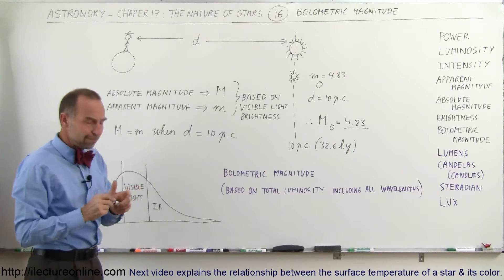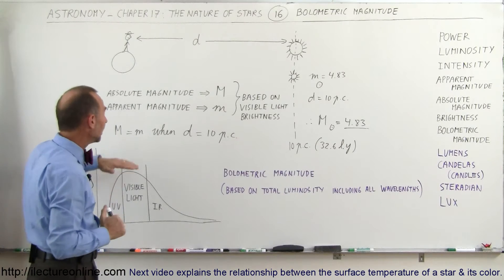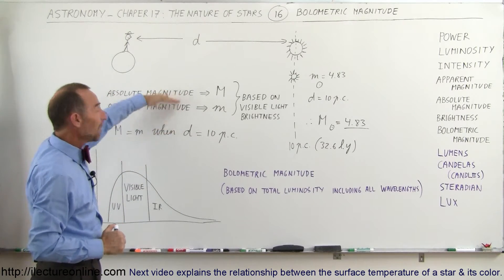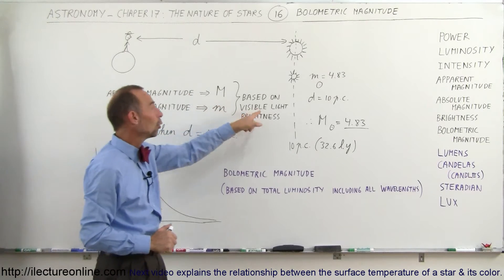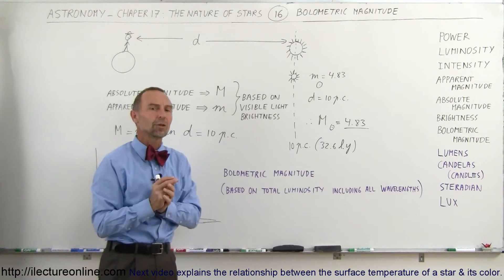Now, the bolometric magnitude is something similar to that. First of all, what we can say is that these magnitudes, the apparent and the absolute magnitude, are based on only the visible light that we receive from the star.